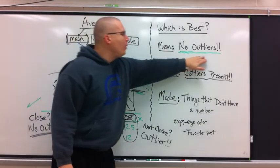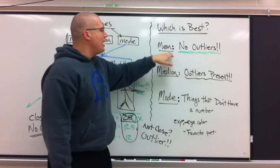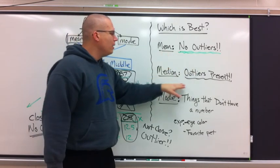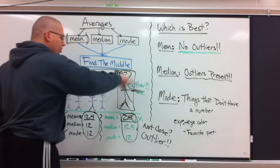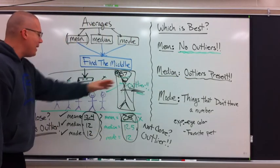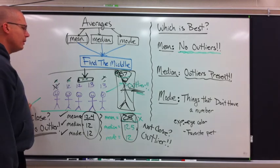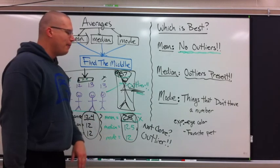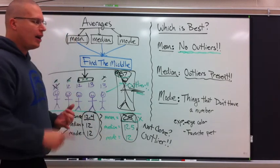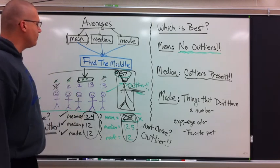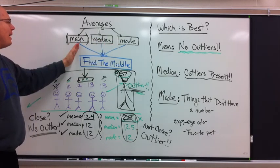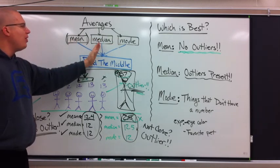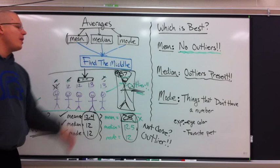Mean. No outliers can be present if you want him to work right. Median. It doesn't matter if outliers are there, he will take care of them. He'll cross them off just as fast if they're really big or really small. Mode is used for things that typically don't have numbers. Eye color, favorite pets, things like that. Remember, they all do the same. Each one has a specific job. Best with no outliers. Best with an outlier, things without numbers.